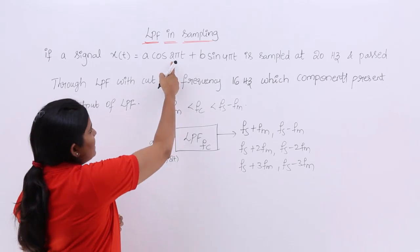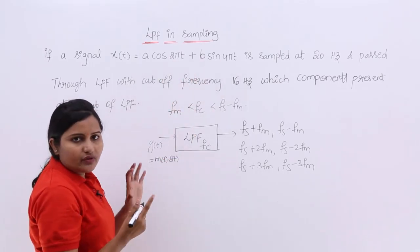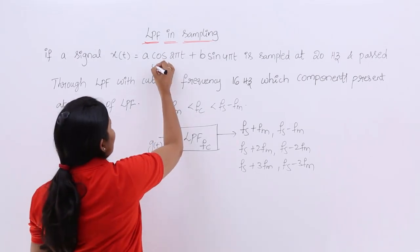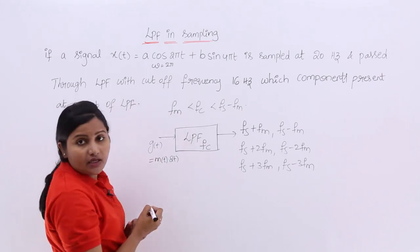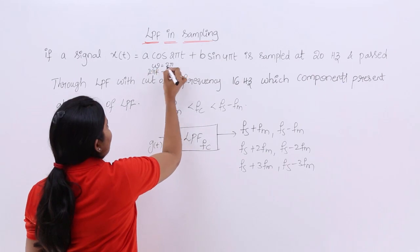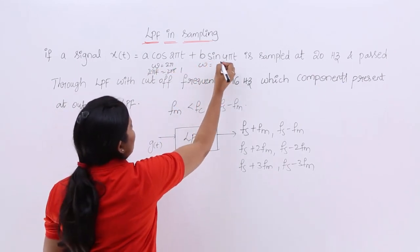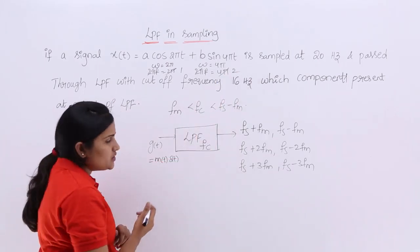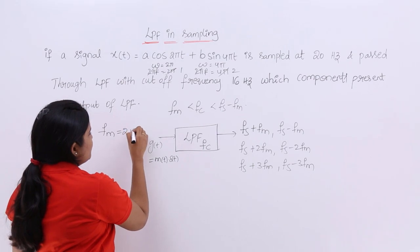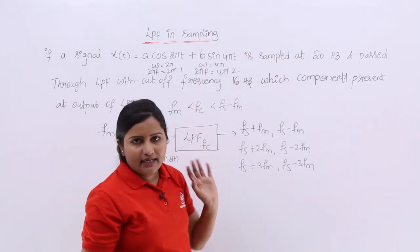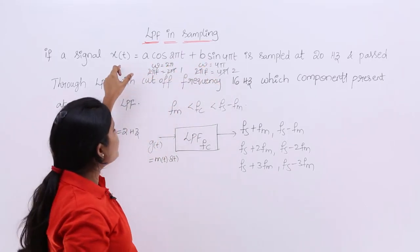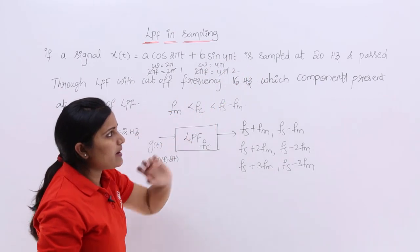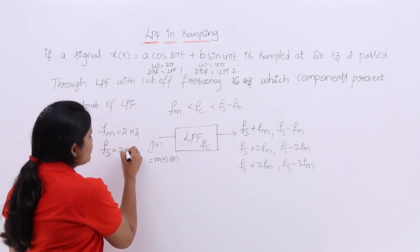Now we need to calculate FM first. In the signal we have two frequency components, so we need the maximum frequency component. Here, for the first term, omega = 2π, so 2πf = 2π and f = 1 Hz. For the second term, omega = 4π, so 2πf = 4π and f = 2 Hz. Therefore, FM = 2 Hz — the maximum of {1, 2} is 2 Hz. This message signal is sampled at 20 Hz, so FS = 20 Hz.